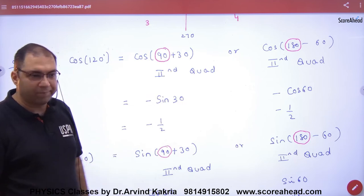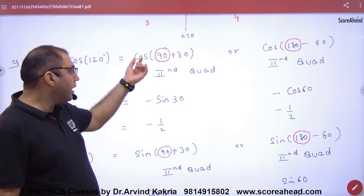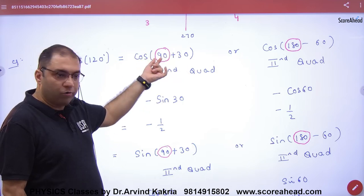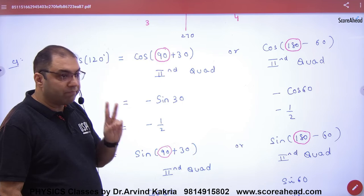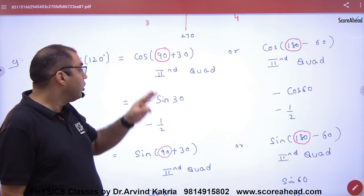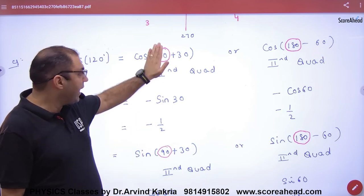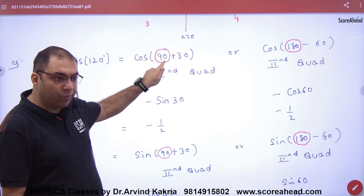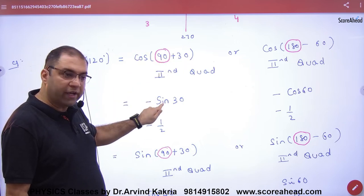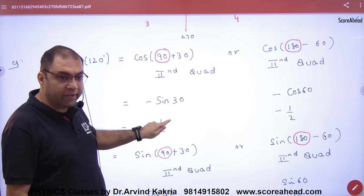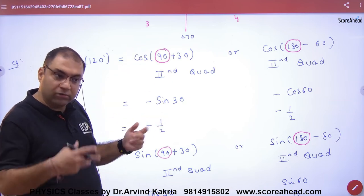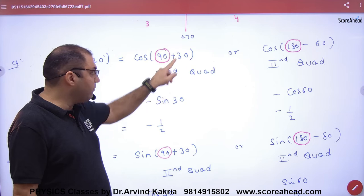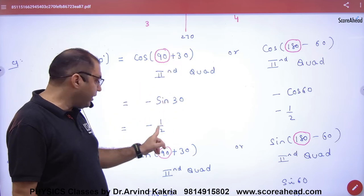This is important: if the standard angle used is 90 or 270, then cos will be converted to sine. So for cos(90 + 30), the 90 is removed, cos converts to sin, and we get sin(30), which is one half. With the negative sign, the answer is minus half.